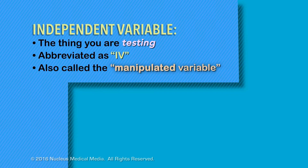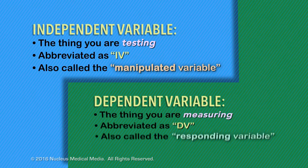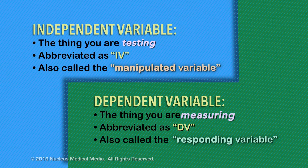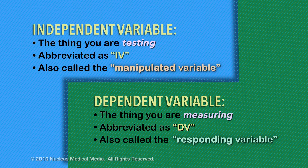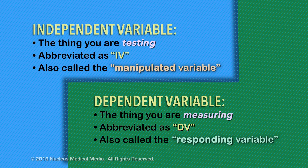In an experiment, the dependent variable is the thing you're observing and measuring — the thing you're anticipating may be affected as a result of exposure to the independent variable. It's often abbreviated as DV and sometimes called the responding variable, because it responds to the change that you make.